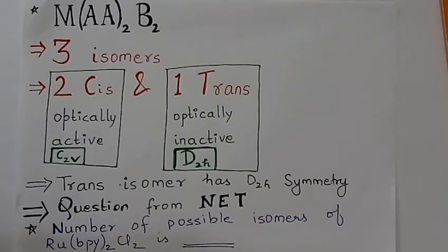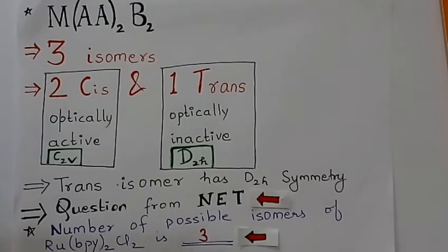Complexes with the general formula MAA2B2 have three isomers: two cis isomers and one trans isomer. The two cis isomers are optically active with point group C2V, whereas the trans isomer is optically inactive with point group D2H. Here we have a question from NET asking for the number of possible isomers, and the answer is three.